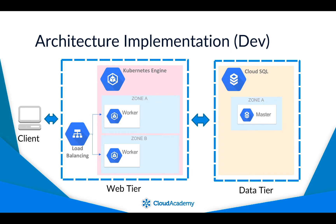There are also additional resources that aren't included in the diagram. The diagram shows what you need to know at a high level without getting into the details of Kubernetes. There is one more resource to include, and that is a Google Cloud Storage bucket. The demo will illustrate how to use a GCS bucket as the backend for Terraform's state.